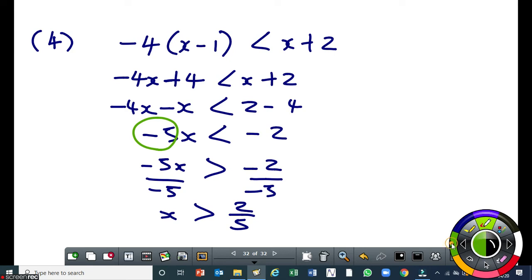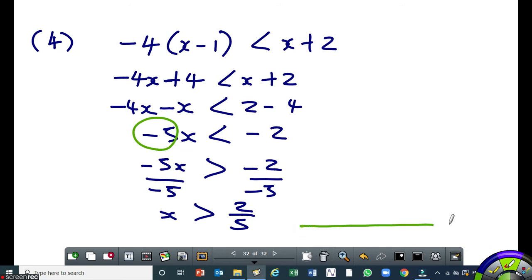Then, I need to illustrate that on a number line. So, I'll draw my number line here. It's 2 over 5, I can just put it here. Then, since x is greater than 2 over 5, I'll draw my small circle on top. Then, my arrow will be pointing to the right because we are dealing with the values of x that are greater than 2 over 5.